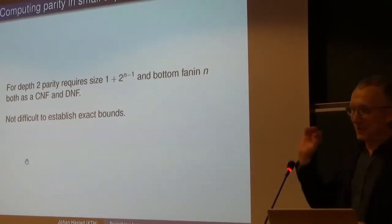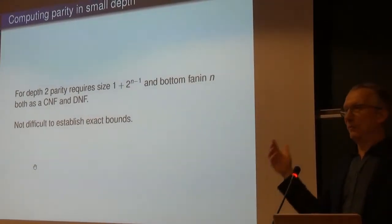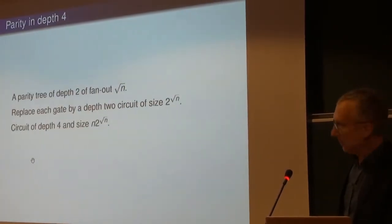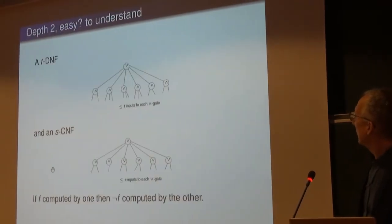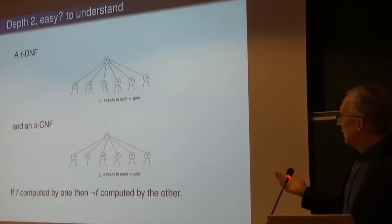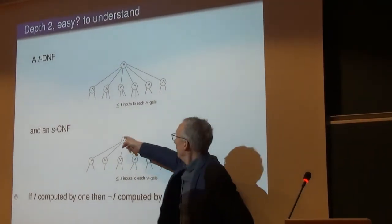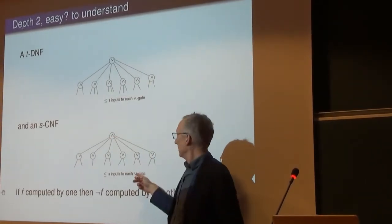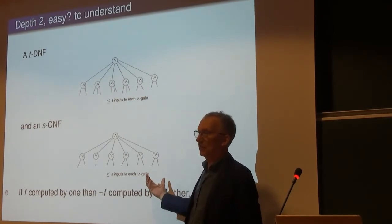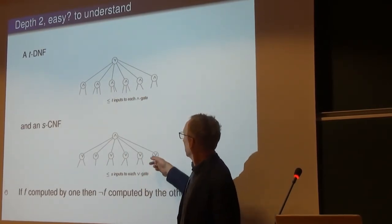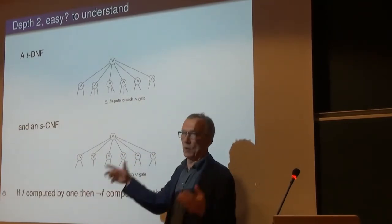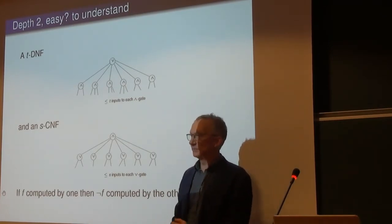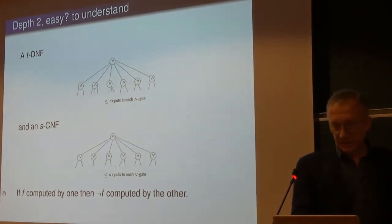2 to the N minus 1, in fact — that's the only way to do it. If you want to compute parity in this model, as soon as one of the ORs turns to 0 the output is 0, so you need fanin N at the bottom. One OR gate is 0 for a single input, so you end up with 2^(N-1) OR gates — it's very easy to understand.